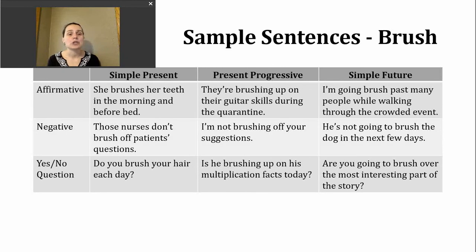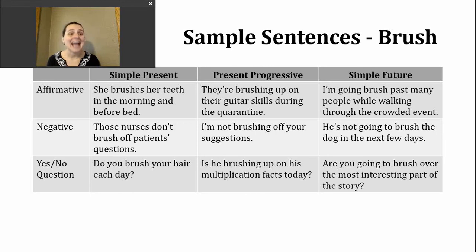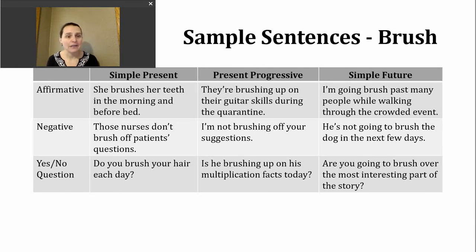Today, let's practice using 'brush' in the simple present, present progressive, and simple future. We'll start with simple present. When we use the simple present verb tense, we're generally talking about facts, habits and routines, or current states. In the affirmative, if our subject is he, she, or it, we normally add -s, but because this verb ends with 'sh,' we add -es. Example: she brushes her teeth in the morning and before bed — that's a habit or routine.